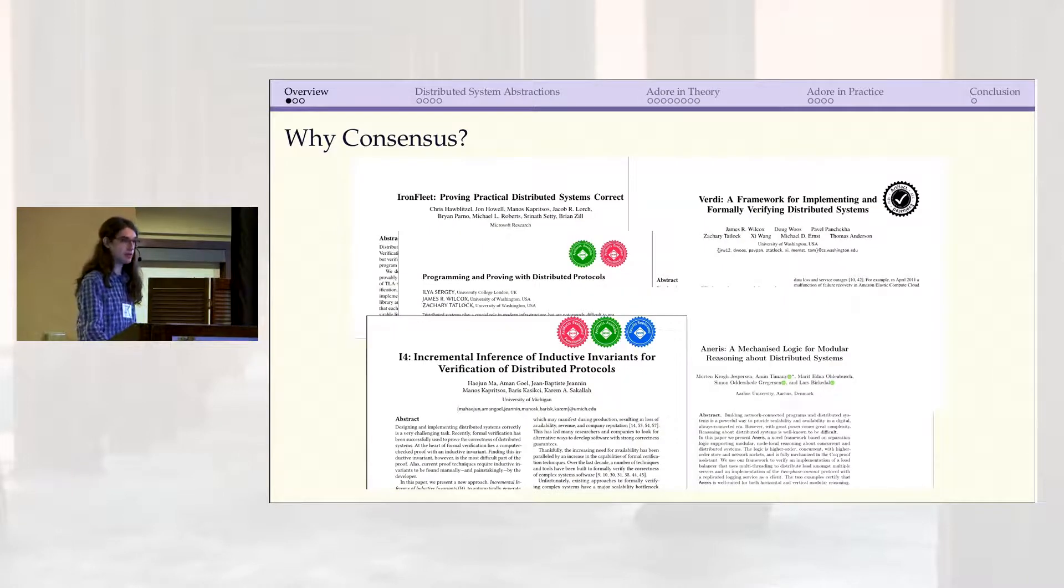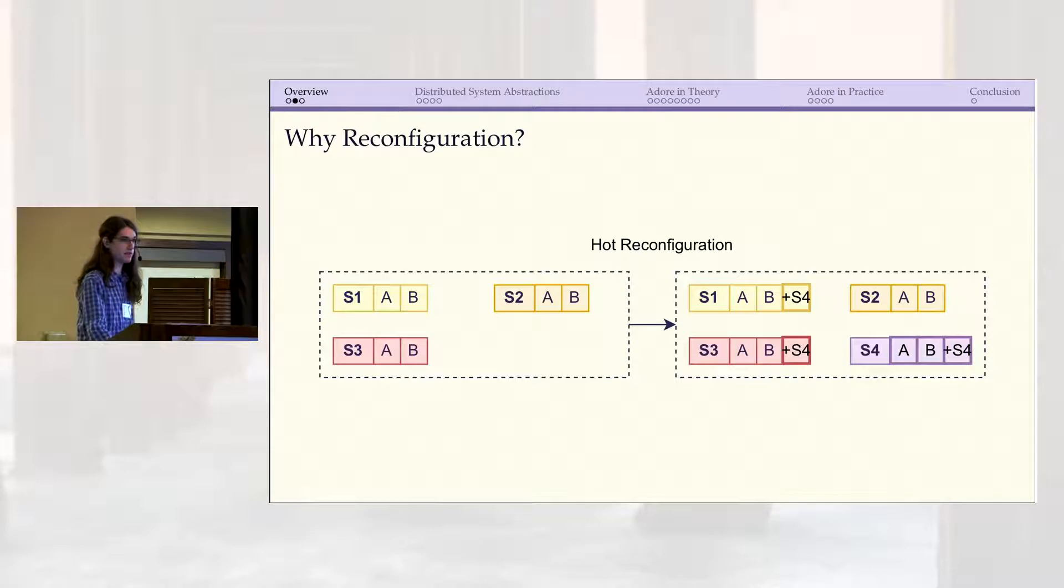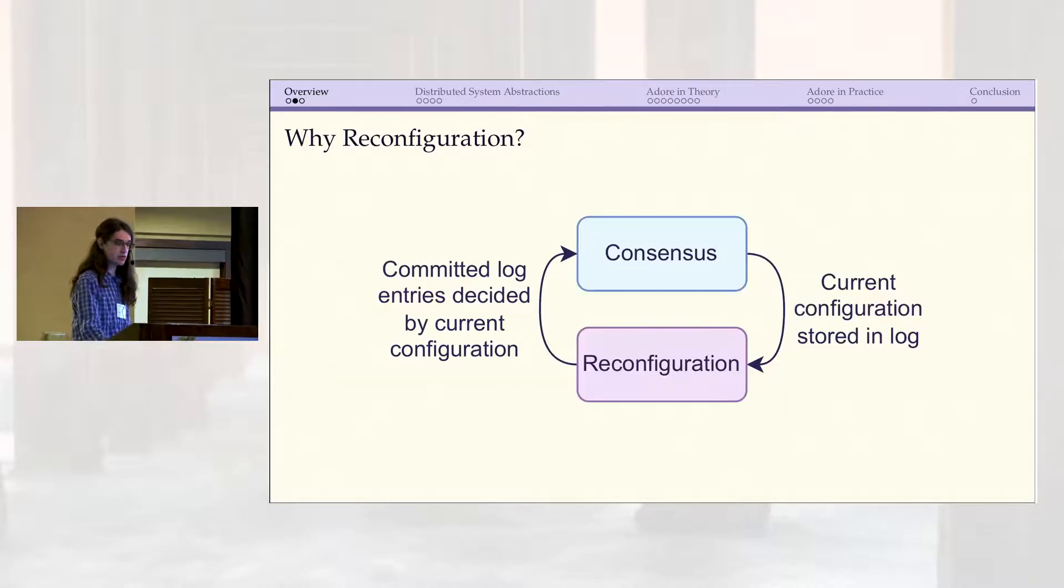Proving the safety of consensus can be quite challenging, but it's a well-studied area with lots of interesting approaches. However, in the real world, it often requires additional extensions that can further complicate matters. One such extension is reconfiguration, which is the process by which the set of participating servers can change if one crashes or needs to be updated. There are many ways of doing this, but one class that we're especially interested in is hot reconfiguration, where the set of participants changes dynamically by leveraging the log replication mechanism. This can be very efficient, but it also creates additional complexity, because now we have this circularity where consensus depends on the current configuration, but the configuration is itself being managed by consensus.